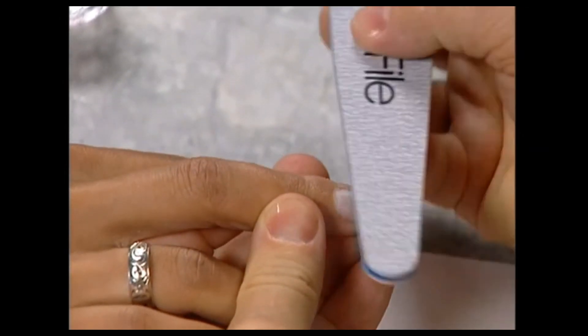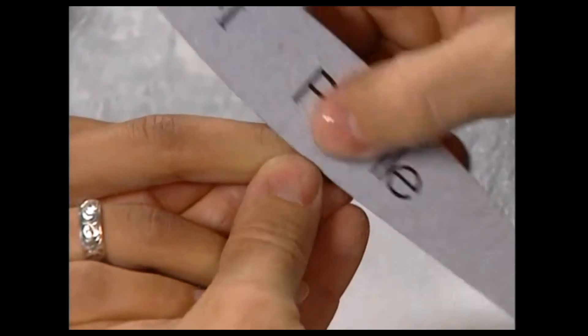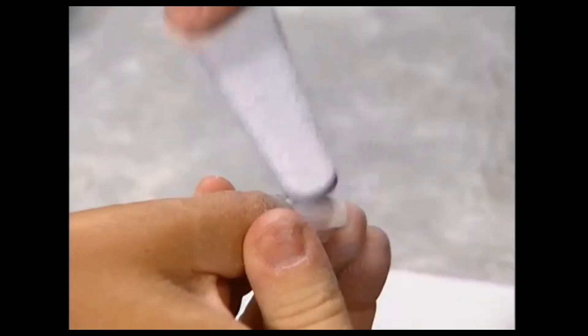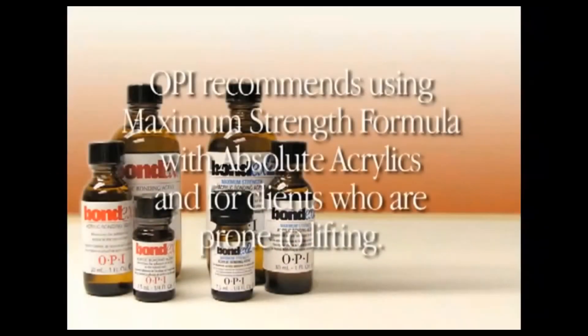After preparing the nails as shown in the nail prep segment of this DVD, apply the appropriate Bondex acrylic bonding agent formula to all nails, being careful not to touch them after application. It is recommended to use Bondex maximum strength formula with Absolute acrylics and particularly for clients who are prone to lifting.